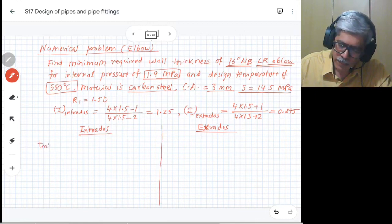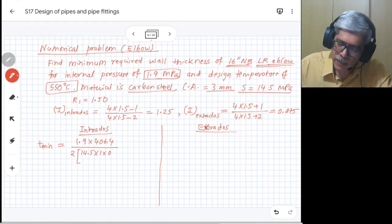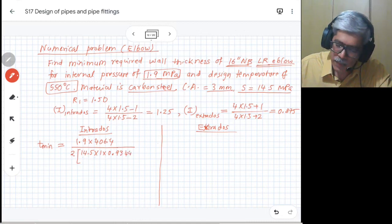At intrados, t minimum would be given as pressure multiplied by the diameter, which is 406.4, divided by 2 into S, into joint factor - we are considering seamless, so that is 1. The factor W is same as that for the straight pipe problem since the temperature is same, so it is 0.9344, divided by the I factor which is 1.25 here.